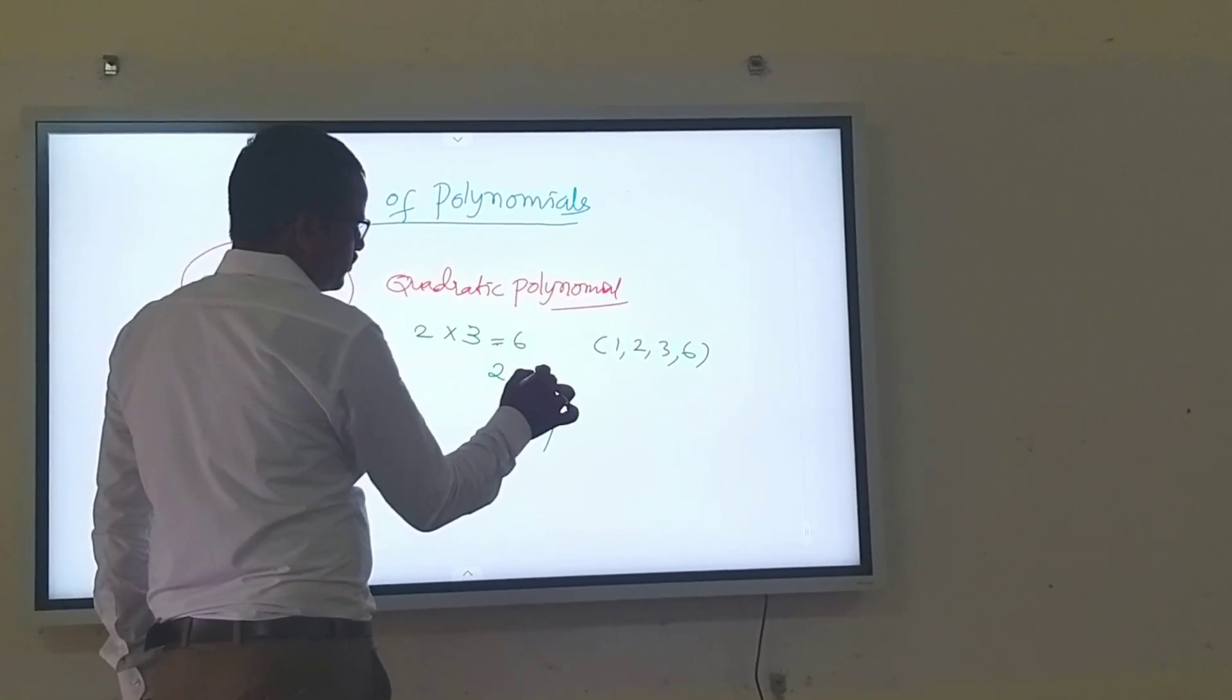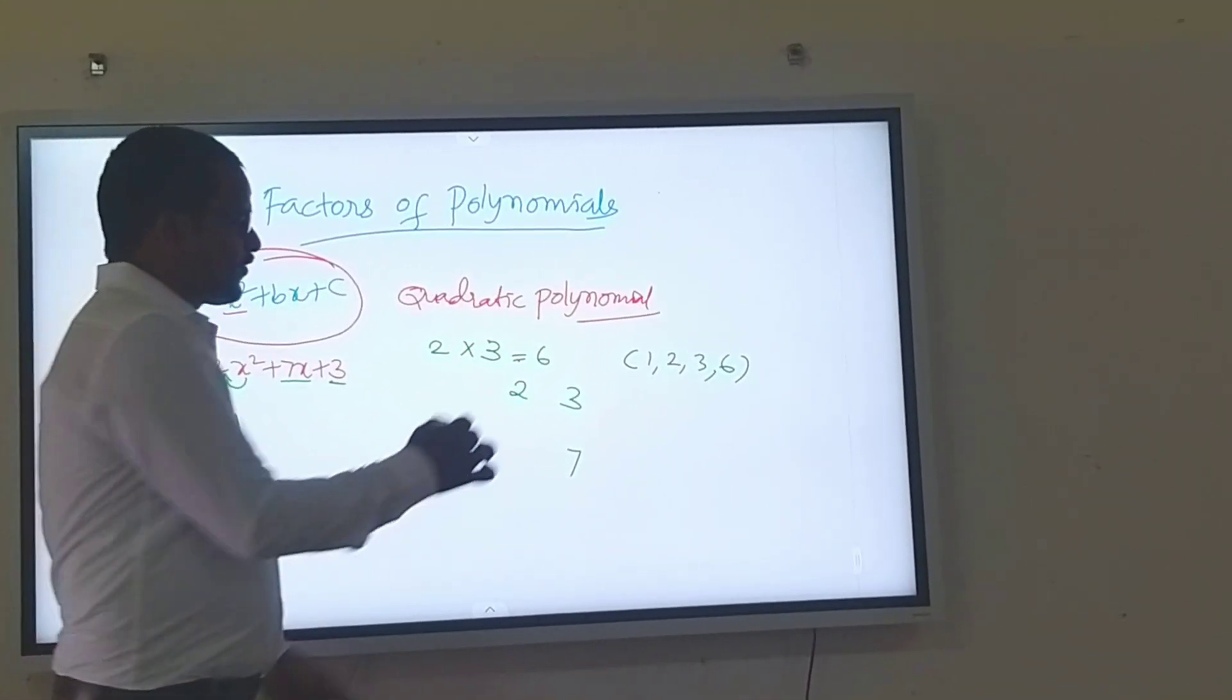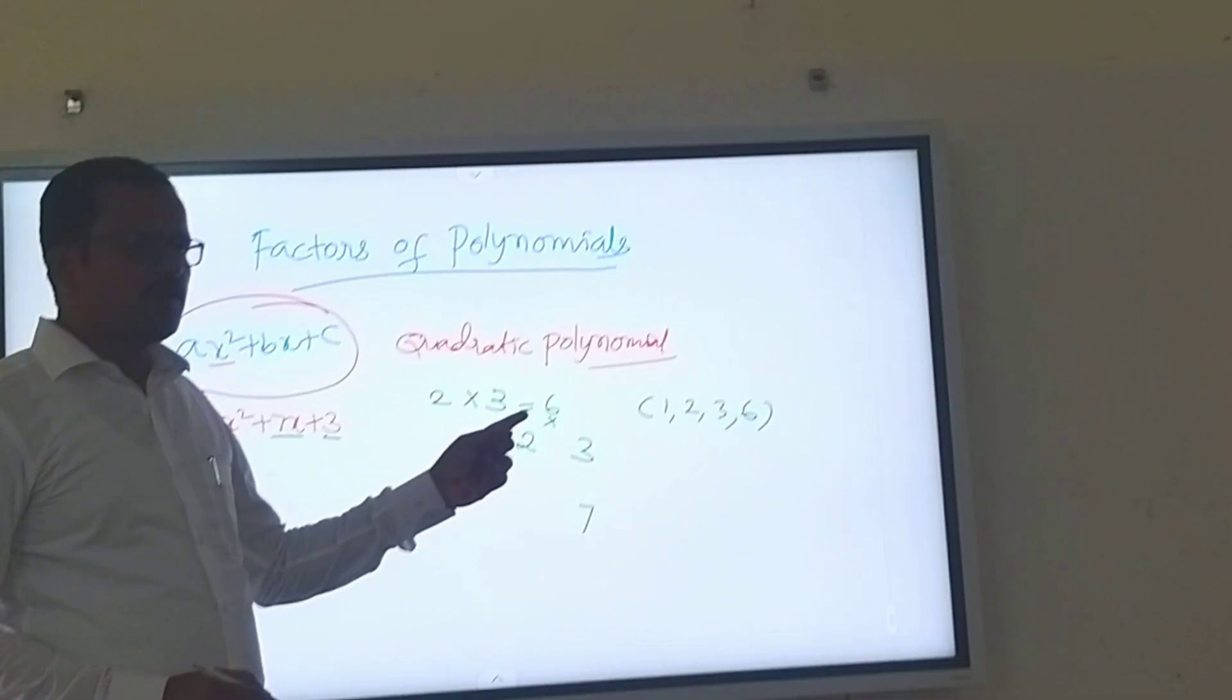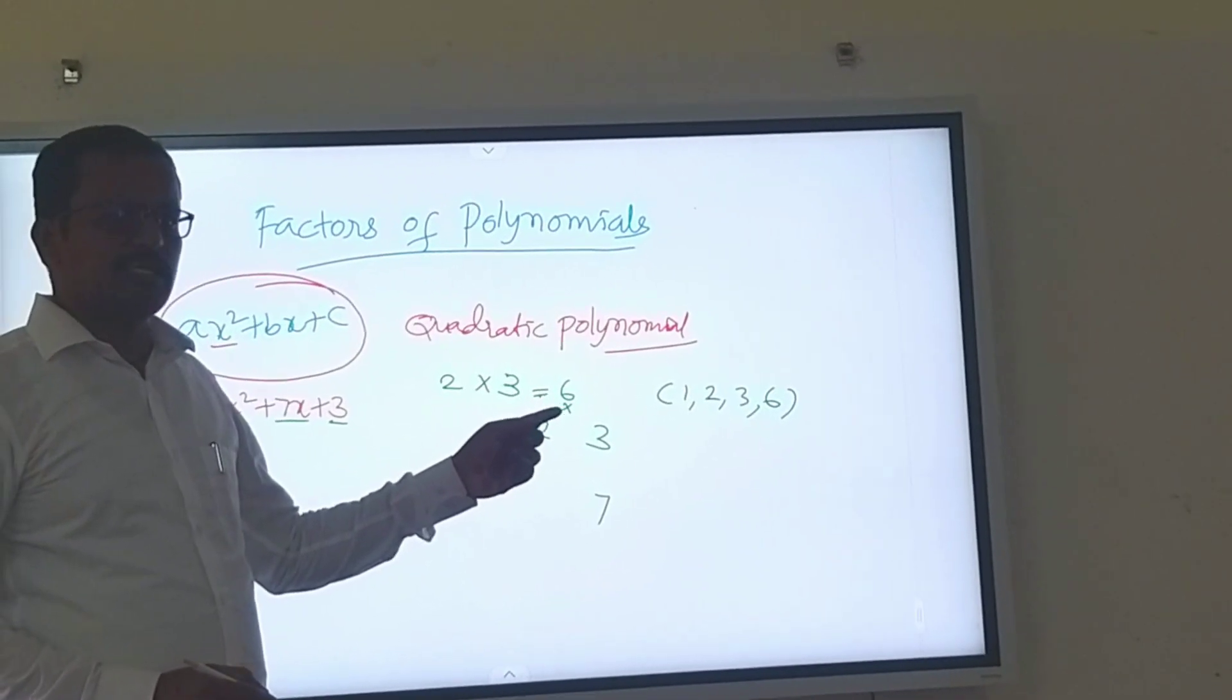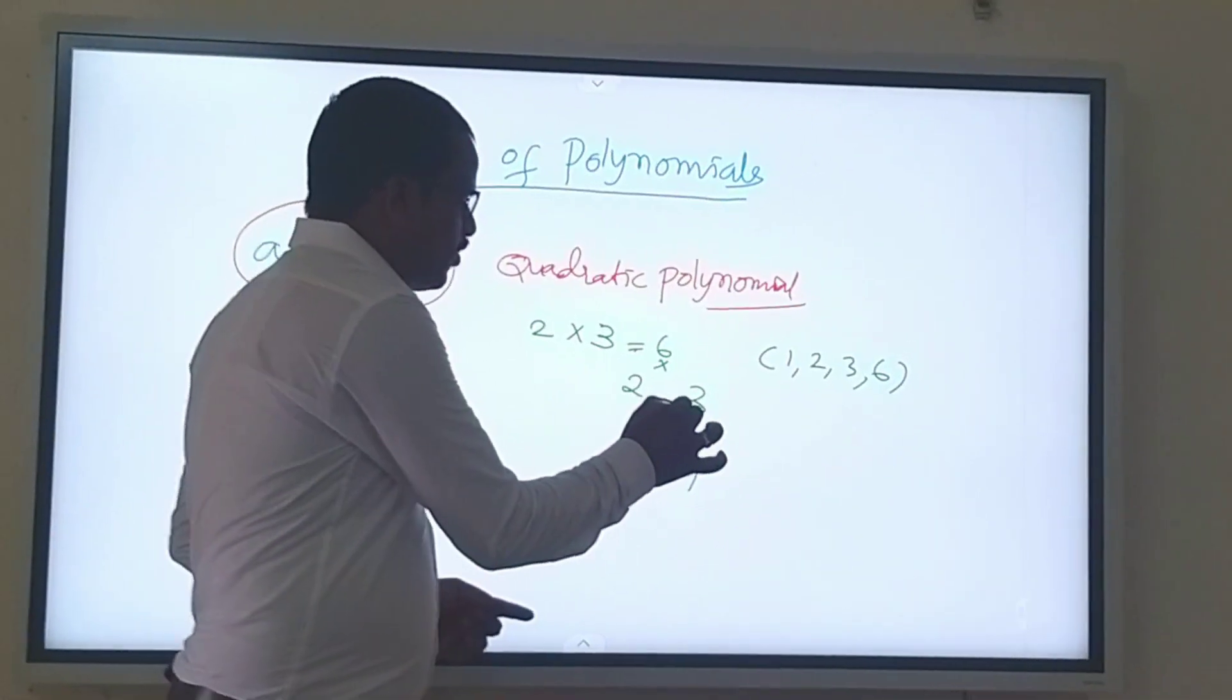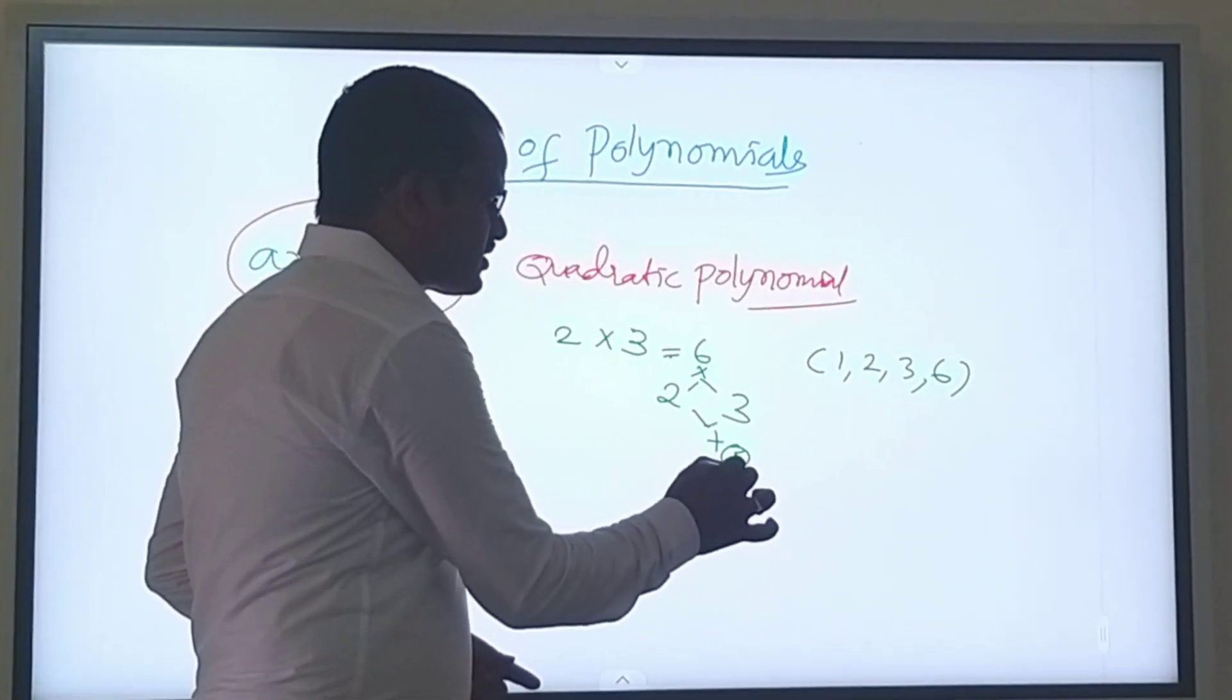Suppose 2 into 3, how much? 2 into 3 is 6. If you multiply 2 into 3, you get 6. If you add both 2 and 3, you get only 5, not 7.